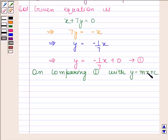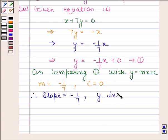that is coefficient of x, is equal to minus 1 by 7, and c is equal to 0. Therefore, slope is equal to minus 1 by 7 and y-intercept is equal to 0.